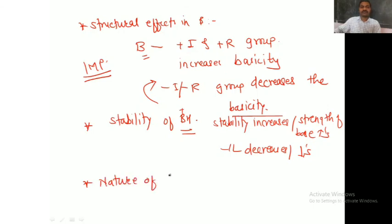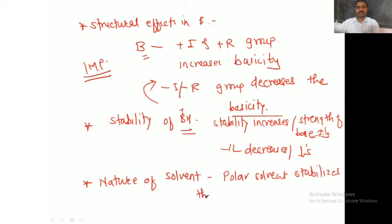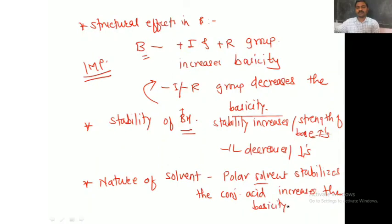The last factor is the nature of the solvent. A polar solvent stabilizes the conjugate acid BH⁺, and hence a polar solvent increases the basicity of the base.